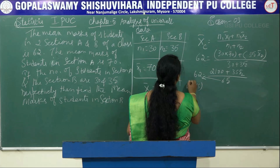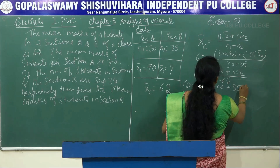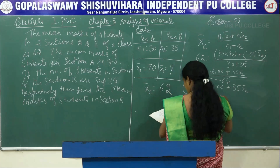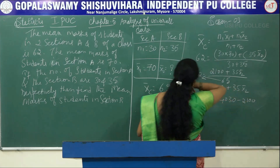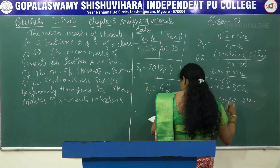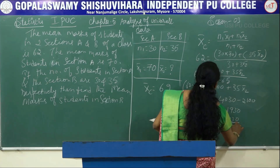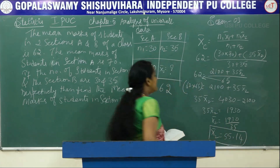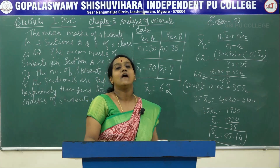Cross multiplying: 62 × 65 = 2100 + 35·x̄₂, which gives 4030 = 2100 + 35·x̄₂. Shifting 2100 to the other side: 35·x̄₂ = 4030 − 2100 = 1930. Therefore x̄₂ = 1930 / 35 = 55.14. The mean marks of section B is 55.14.